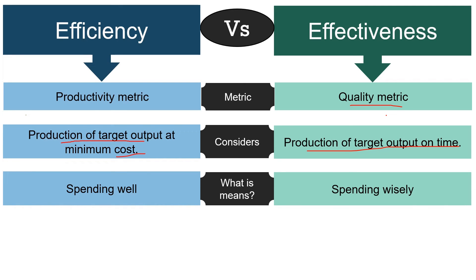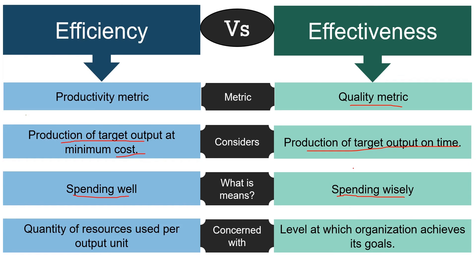In simple terms, efficiency means spending well, whereas effectiveness means spending wisely. While efficiency is concerned with the quantity of resources used per output unit, effectiveness is concerned with the level at which the organization achieves its goals.